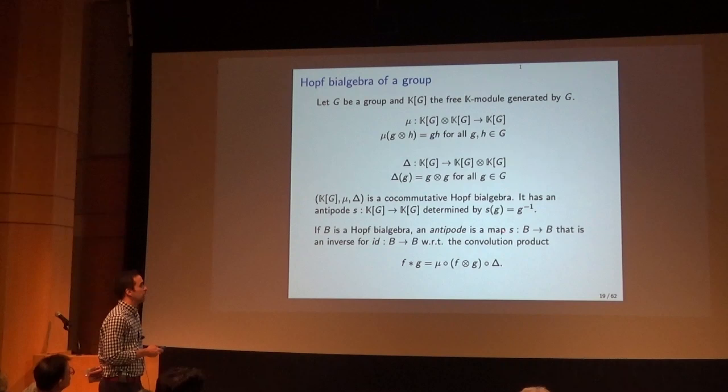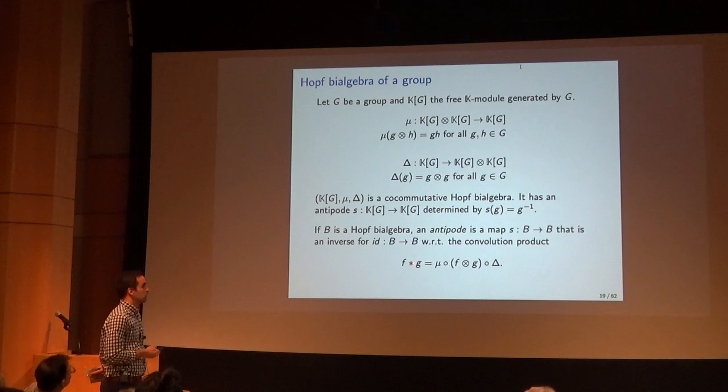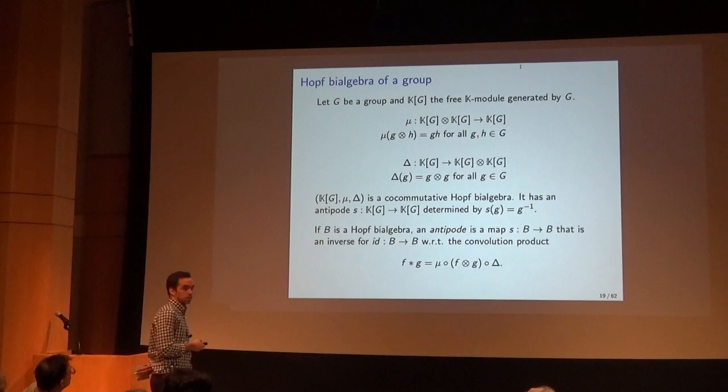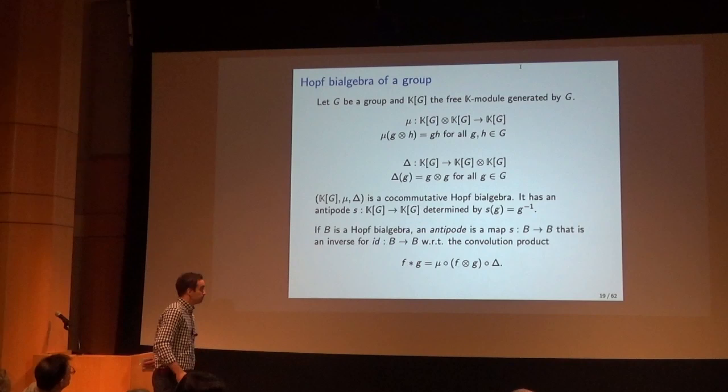This bi-algebra has a special property: it has an antipode map, a self-map satisfying certain conditions. In this case it's given by sending an element to its inverse. If B is a Hopf bi-algebra, an antipode map is a linear map from B to itself that is an inverse for the identity map with respect to the convolution product — you first apply the co-product, then apply F tensor G, then apply the product map. The existence of an antipode is a property of the Hopf bi-algebra.